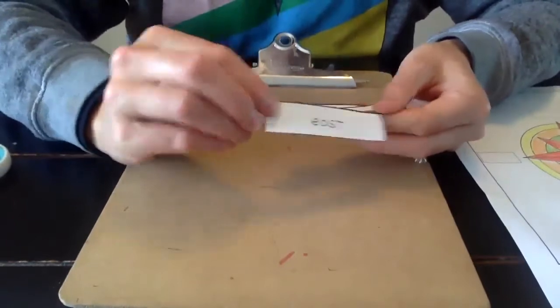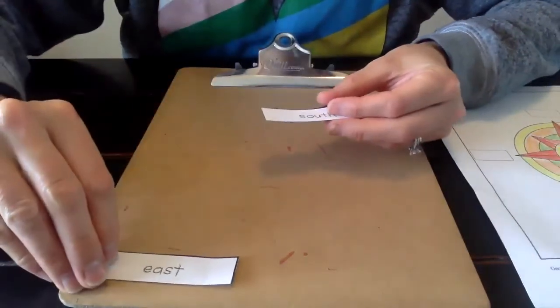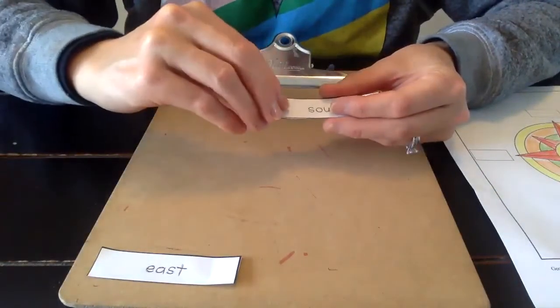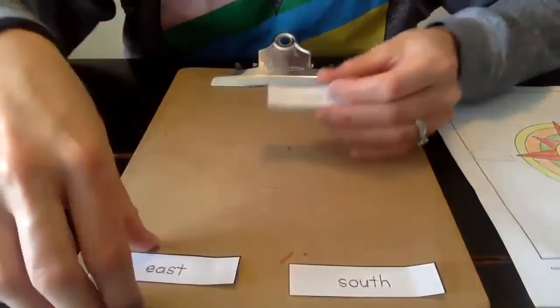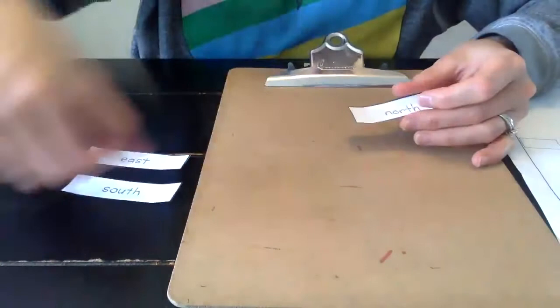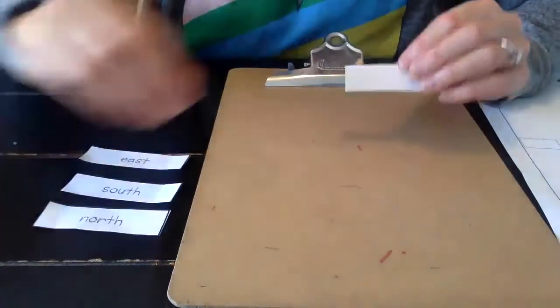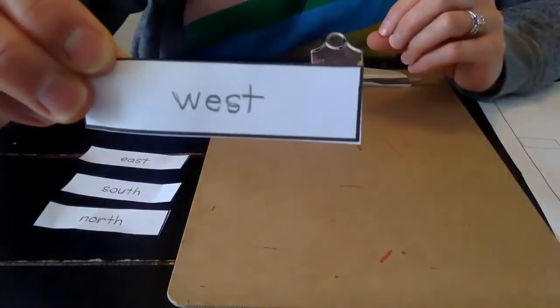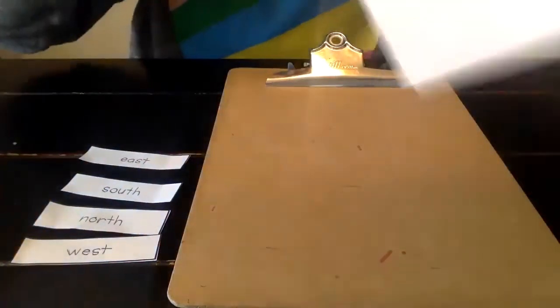So let's read our labels. This says east, this says south, and I'm going to put them to the side actually. East, south, north, and west. And now we get to put them on our compass rose.